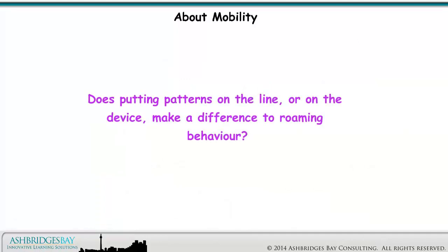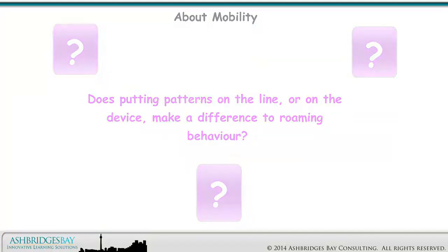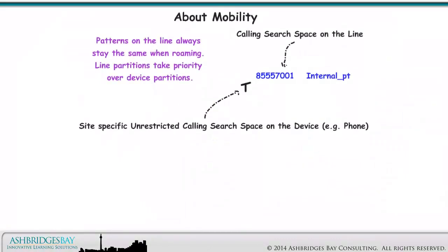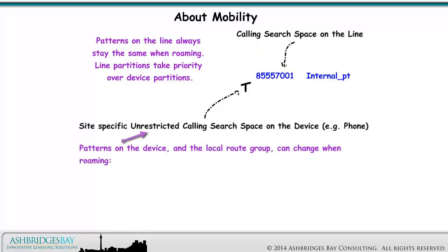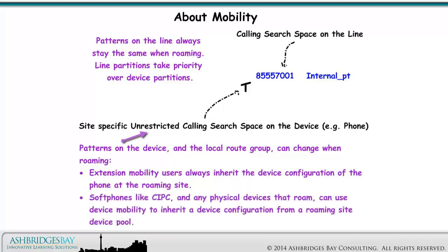Does putting patterns on the line or on the device make a difference to roaming behavior? Patterns on the line always stay the same when roaming — line partitions take priority over device partitions. Patterns on the device and the local route group can change when roaming. Extension mobility users always inherit the device configuration at the roaming site. Soft phones like CIPC and any physical devices that roam can use device mobility to inherit a device configuration from a roaming site device pool.